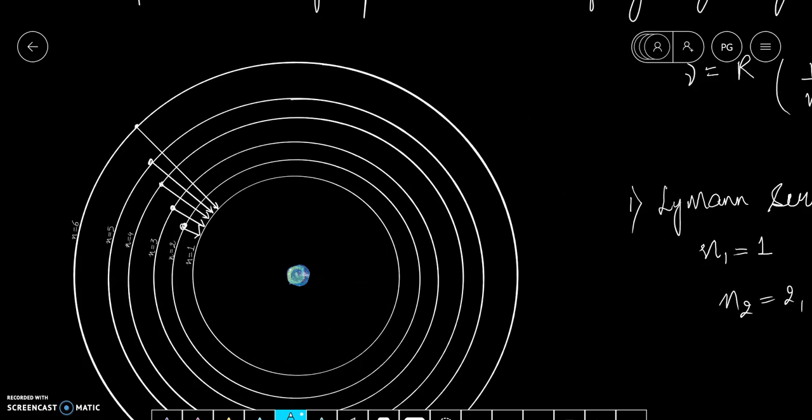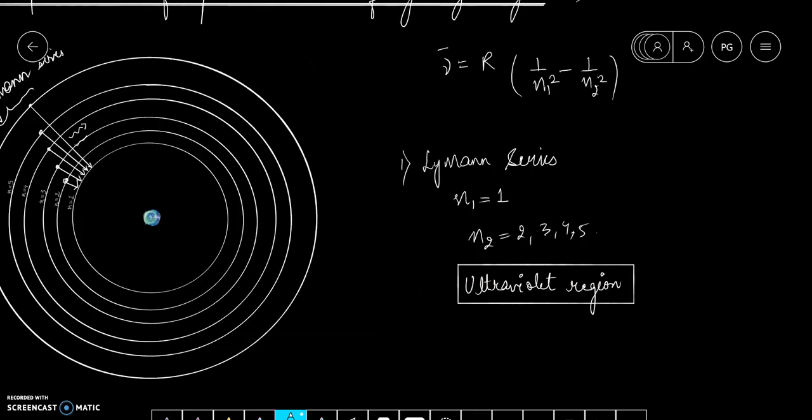In such cases, the photons that appear will belong to the Lyman series of hydrogen spectra. This corresponds to Lyman series and lies in the ultraviolet region of the electromagnetic spectrum.